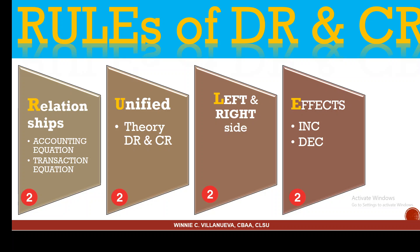What's most crucial is to apply the rules of debit and credit when we are recording or journalizing. The R in our rule stands for Relationships. It's so important for us to always refer to the accounting equation and transaction equation — these two will be unified.